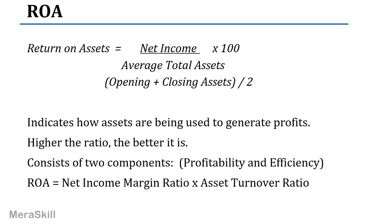The first is return on assets. The return here is net income — after interest, after taxes — divided by assets, multiplied by 100. When we take assets, we take average total assets, which is opening plus closing assets divided by two.